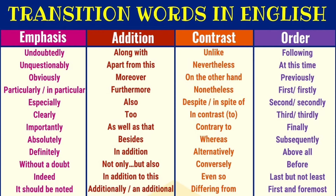If you want to establish contrast or contradiction, you may use: unlike, nevertheless, on the other hand, nonetheless, despite, in spite of, in contrast, contrary to, whereas, alternatively, conversely, even so, and differing from. If you want to show order, you may use: following, at this time, previously, first or firstly, second or secondly, third or thirdly, finally, subsequently, above all, before, and first and foremost.